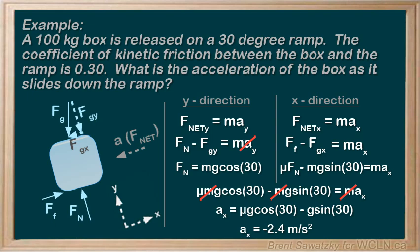Why the negative? Well, if we look back at our axes, we considered up the ramp to be positive. And the box will be accelerating down the ramp. So, a negative acceleration is exactly what we should expect.